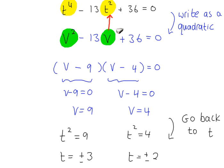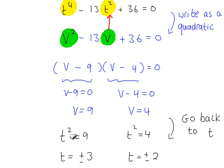We started with an equation which is clearly not a quadratic equation. We recognised that squaring t squared gives t to the power of 4, so this is a disguised quadratic. We used the substitution v equals t squared to write the equation in terms of v, factorised, and solved. Then we undo the substitution by replacing v with t squared. Because these are equations, when you square root both sides you get plus or minus — two solutions. So we have four solutions: plus or minus 3 and plus or minus 2.